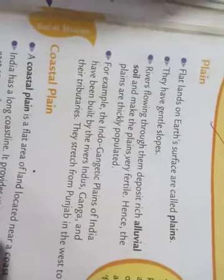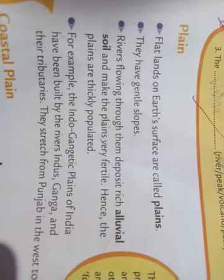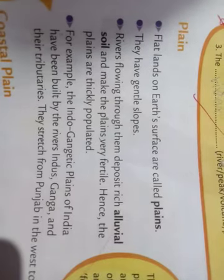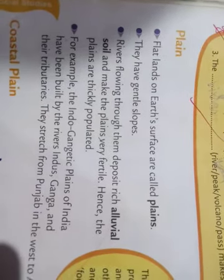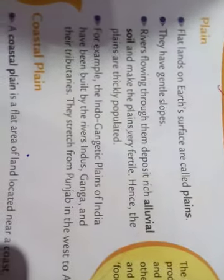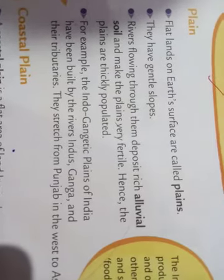The next landform is Plain. What is a plain? A flat land on earth's surface is called a plain. Rivers flow through the plains and deposit rich alluvial soil, making these plains very fertile. That is why plains are very populated. For example, the Indo-Gangetic Plains.